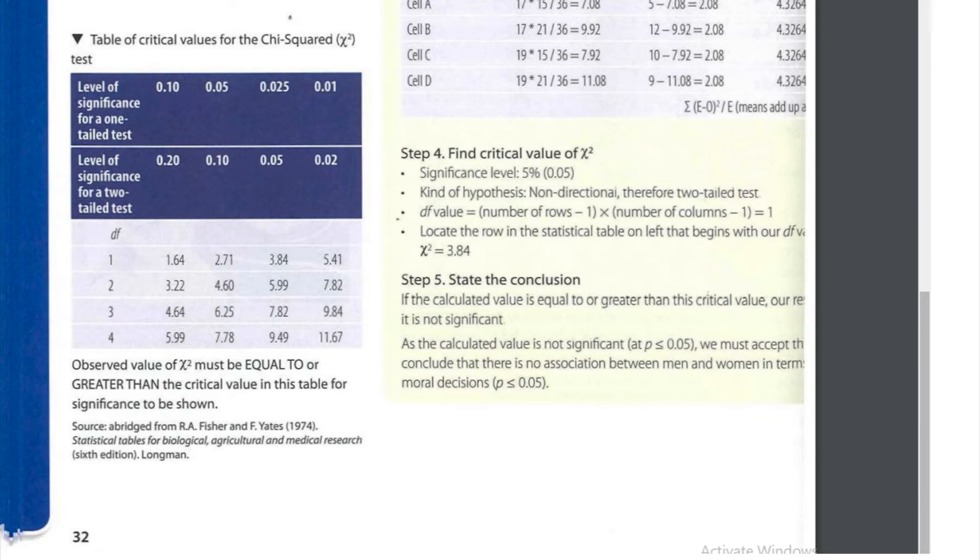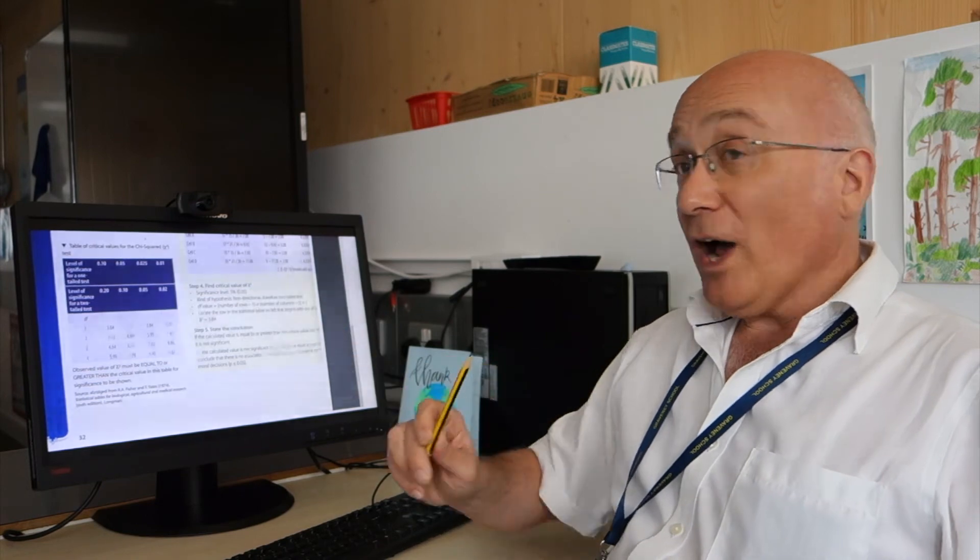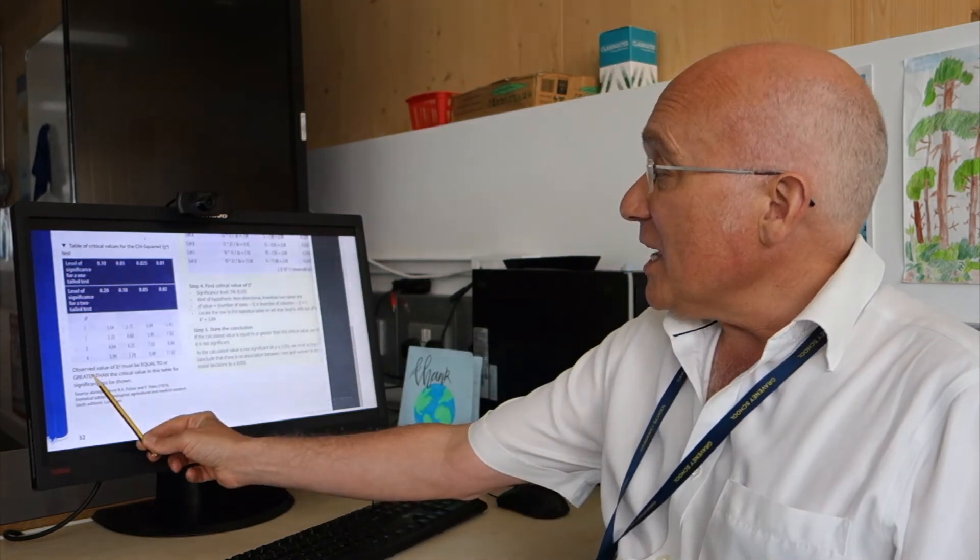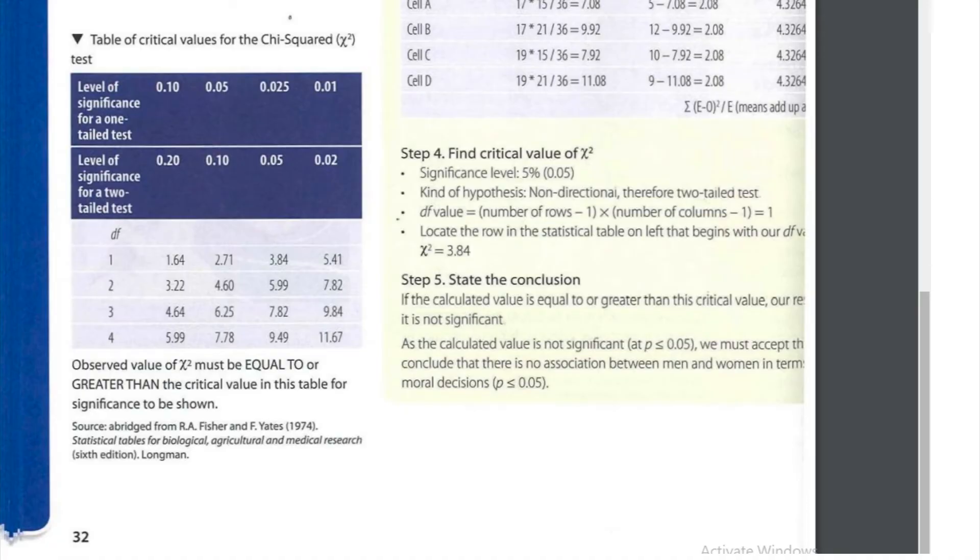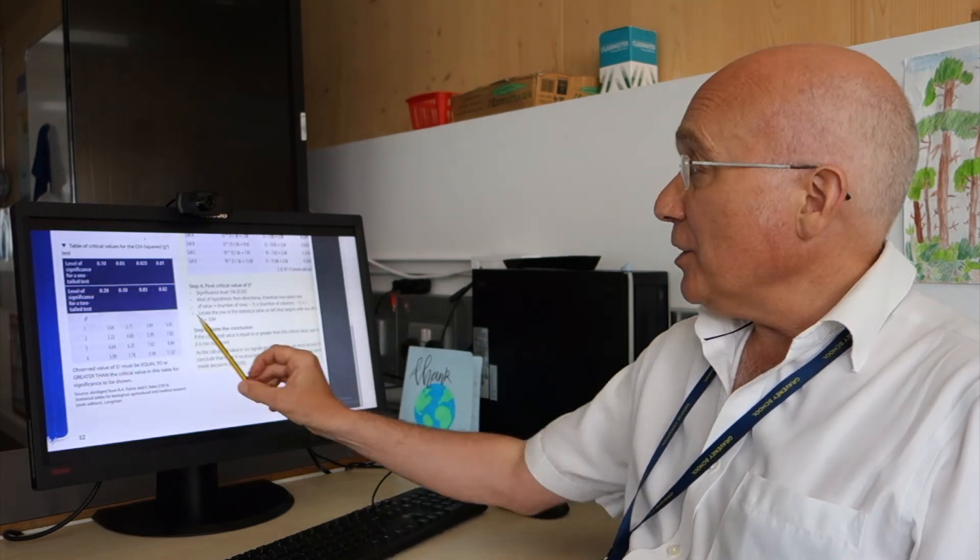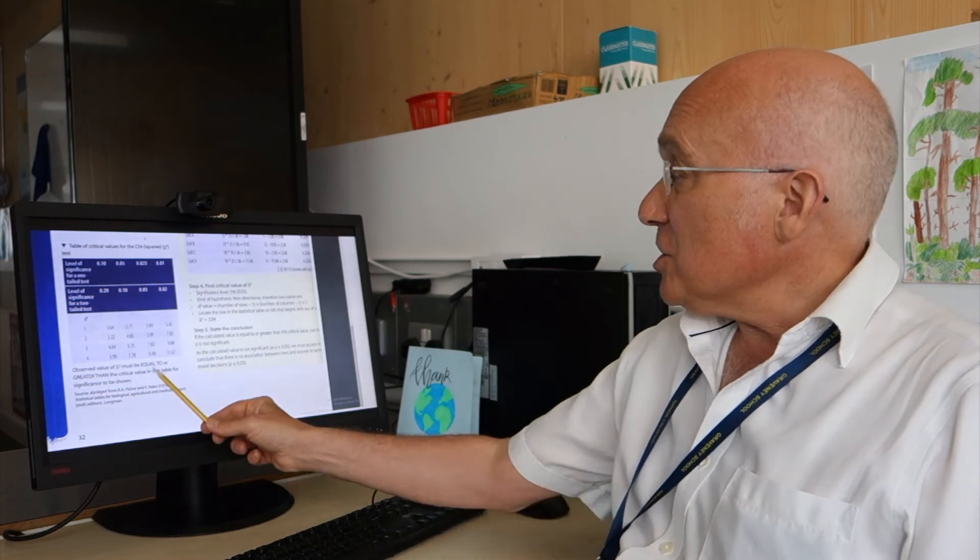OK? The observed value is 0.134, the critical value is 3.84. Right, underneath the table, it says that the observed value of chi-squared must be equal to, or greater than, the critical value in this table for significance to be shown. Now, clearly that statement is not true, because the observed value, 0.134, is a lot less than the critical value, 3.84. So, significance is not shown.